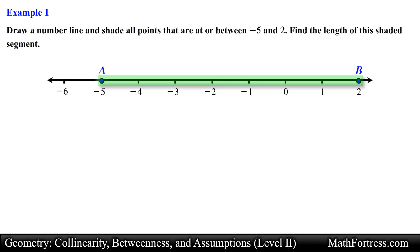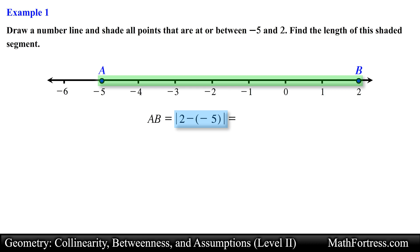So all of these numbers are between negative 5 and positive 2. We also need to find the length of this shaded segment. We can determine the length by taking the absolute value of the difference between the two endpoints. Doing that we obtain 7 for the length of the shaded segment. And this is our final answer.